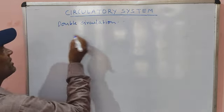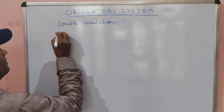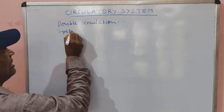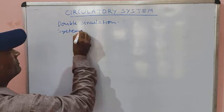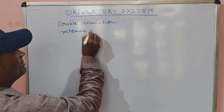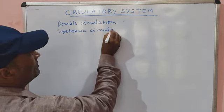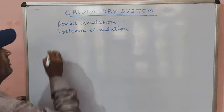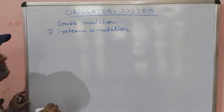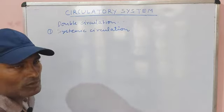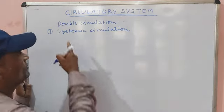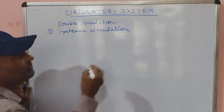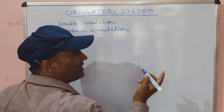Double circulation is of two types: systemic circulation and pulmonary circulation. First of all, we are going to discuss about the systemic circulation.